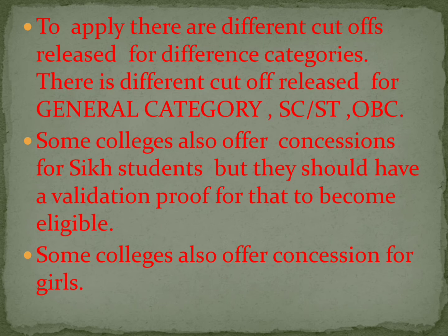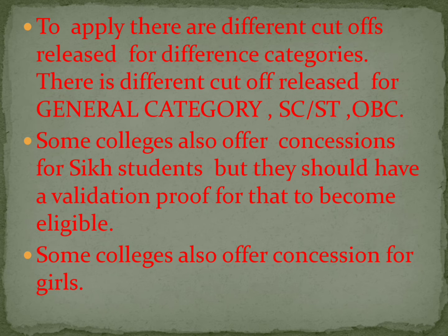After that, there are different cutoffs on different categories. The categories are: General Category, Scheduled Caste, Scheduled Tribe, and OBC. For all these categories, there are different cutoff percentages for each college.